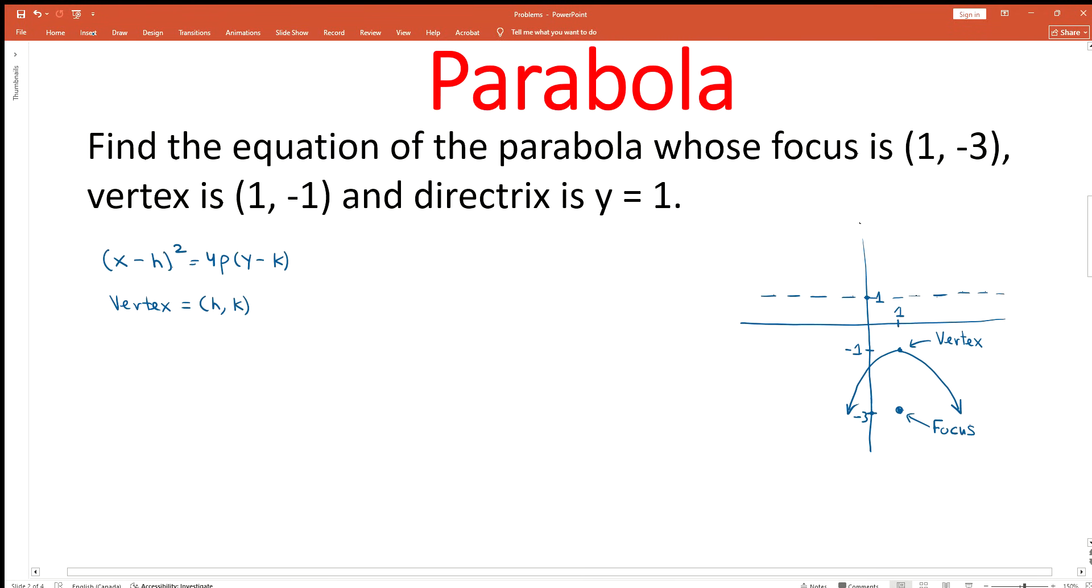We are given that the vertex is (1,-1). That means h equals 1 and k equals -1. We can substitute these values of h and k in the general equation. So (x - 1)² = 4p(y + 1).